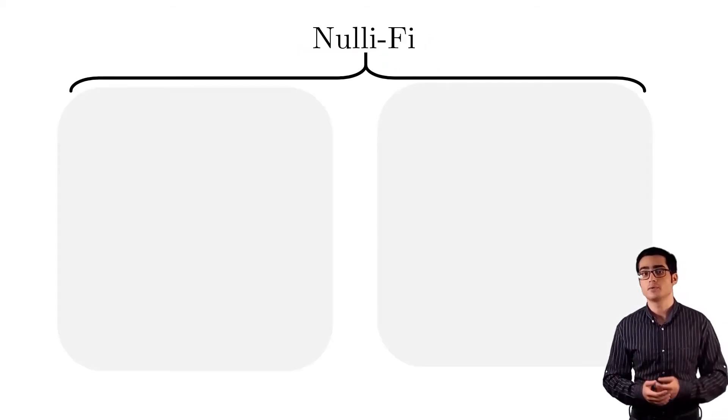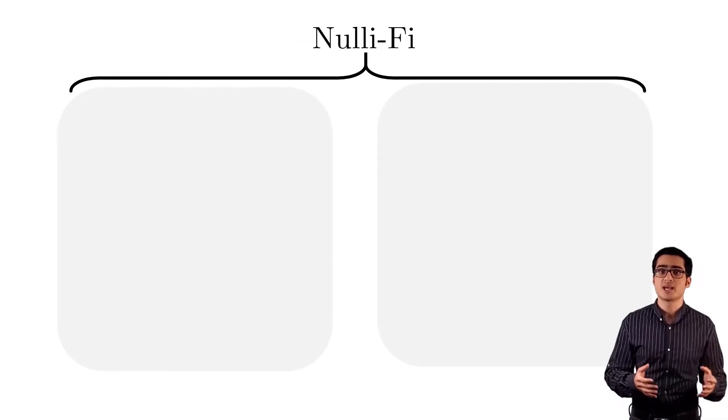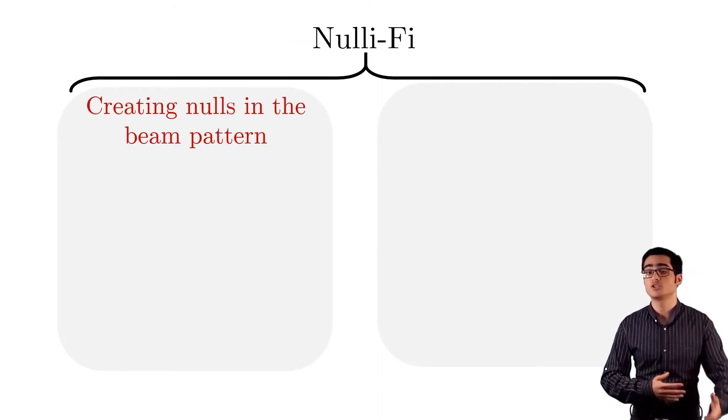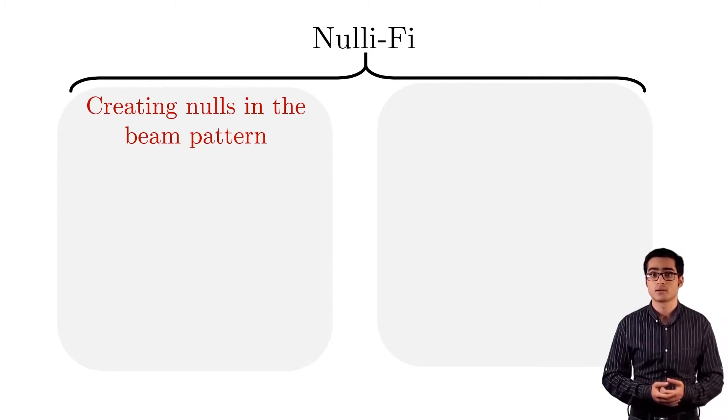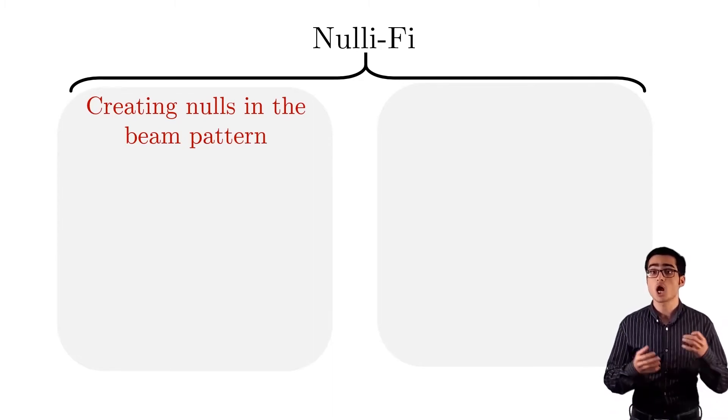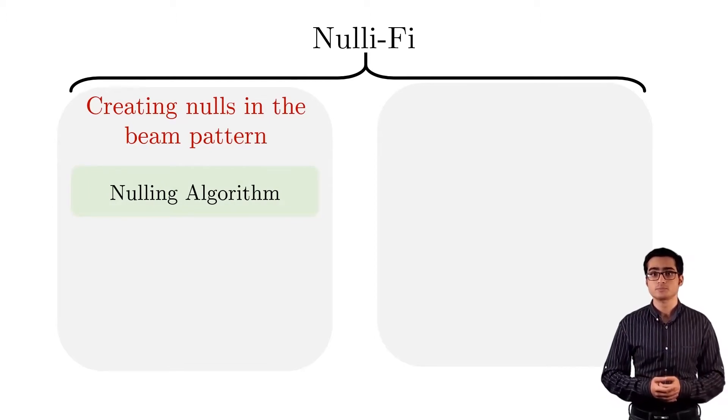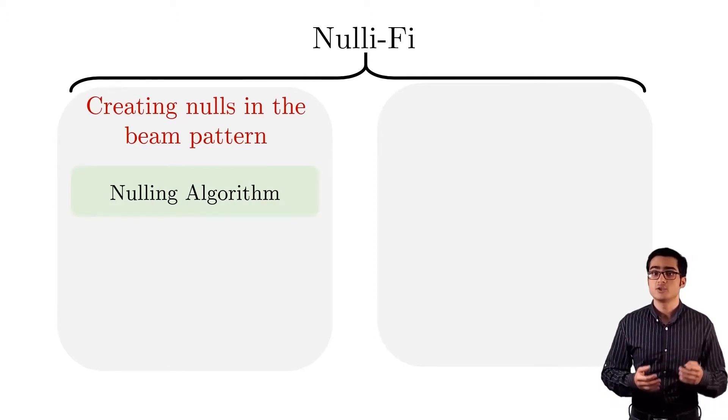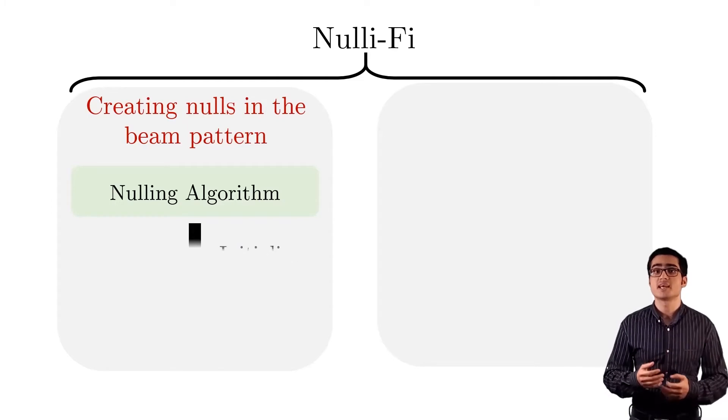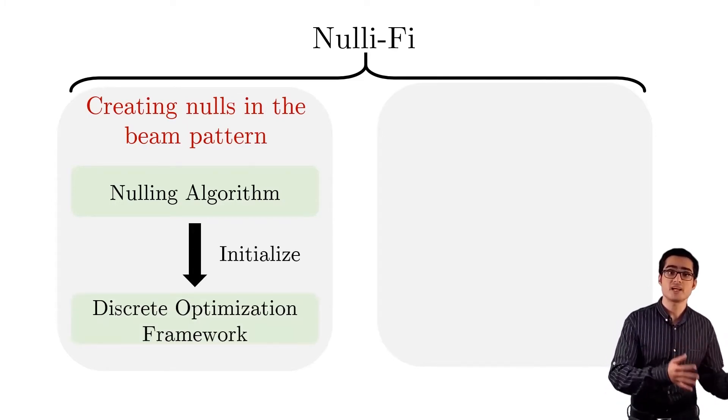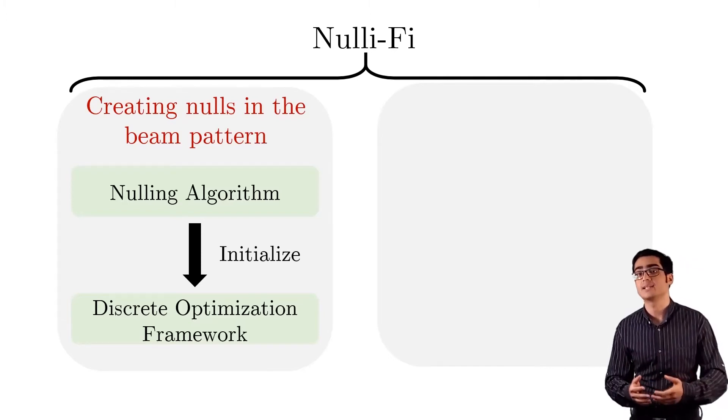Nullify has two components. The first allows us to create beam patterns with nulls in any desired direction. It introduces a new nulling algorithm that can work with limited hardware control. Nullify uses this algorithm to initialize a discrete optimization framework that incorporates hardware imperfections to create wide nulls and multiple nulls.